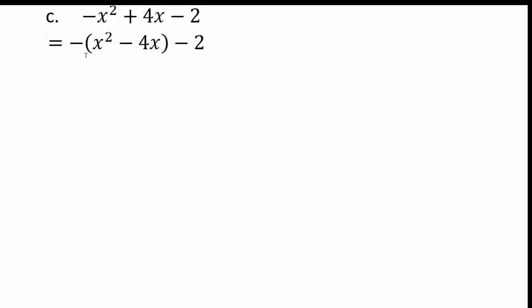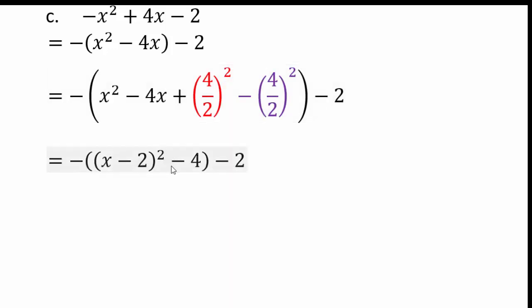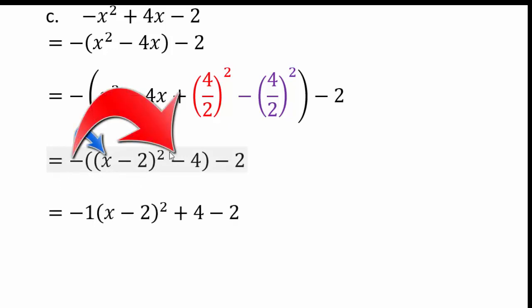For the next example with a negative coefficient: pull out the negative 1, adjusting signs inside to get negative 1 times the quantity x squared minus 4x, minus 2. Complete the square: add 4 over 2 squared which is 4, and subtract 4. This gives x minus 2 squared minus 4. Distributing the negative 1: negative x minus 2 squared, and negative times negative 4 gives positive 4, then minus 2. So 4 minus 2 gives a final constant of 2.